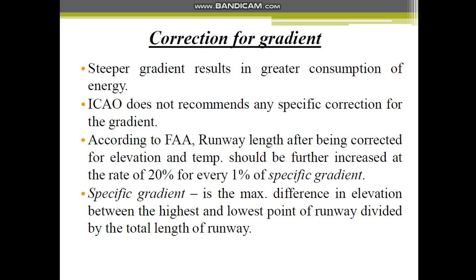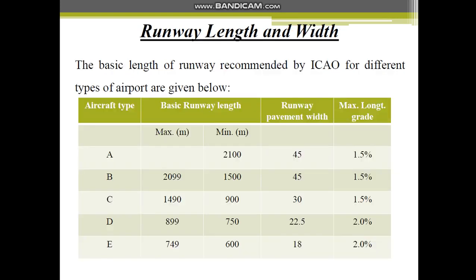Specific gradient will be some percentage value. For every 1% of specific gradient, a 20% increase in the runway length has to be made. After these corrections are made, the actual runway length will be the basic runway length plus correction due to temperature, plus correction due to elevation, plus correction due to gradient. That gives the actual runway length.